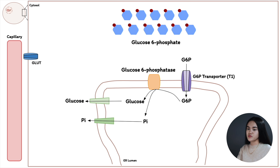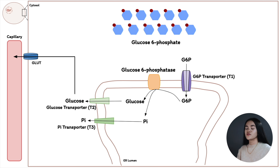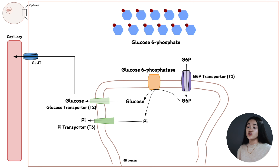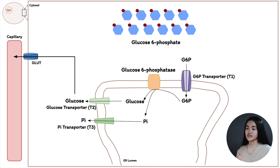After hydrolysis, glucose and inorganic phosphate are transported out of the endoplasmic reticulum through two separate transporters, T2 and T3. Glucose in the cytosol is then transported out of the hepatocyte and into a blood vessel through GLUT2 in the plasma membrane, increasing blood glucose concentration. Importantly, glucose-6-phosphatase is only present in liver and kidney — muscle and adipose tissue cannot convert their glucose-6-phosphate to free glucose, so only the liver releases glucose into the blood.